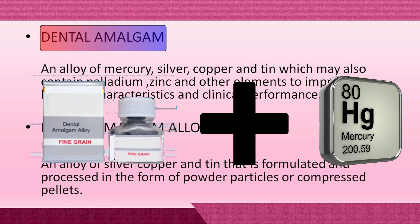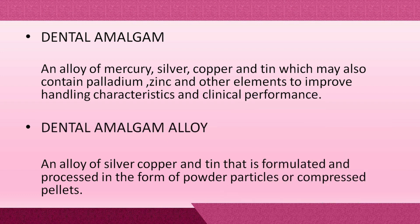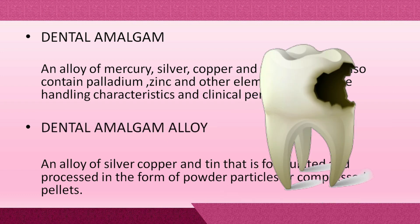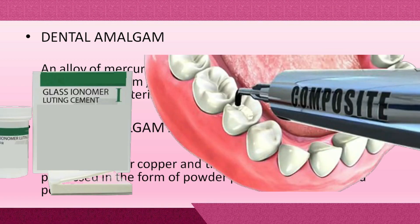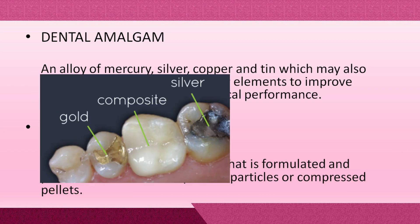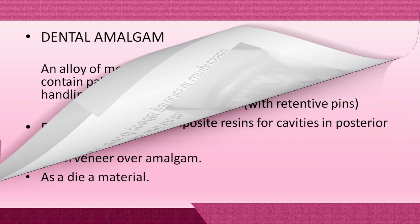Dental amalgam contains mercury, whereas dental amalgam alloy is an alloy without mercury. Nowadays, carious teeth are restored with tooth-colored restorative materials like composites and glass ionomer cements because of their aesthetic value, so use of dental amalgam is very limited. However, dental amalgam has very good clinical performance in terms of retention of the restoration.